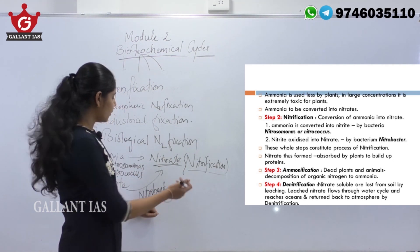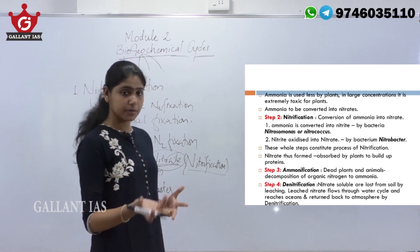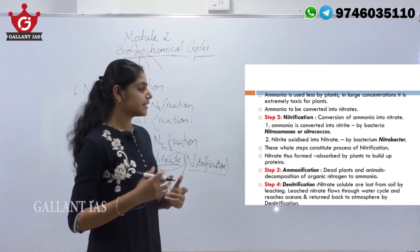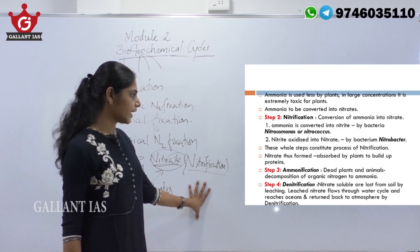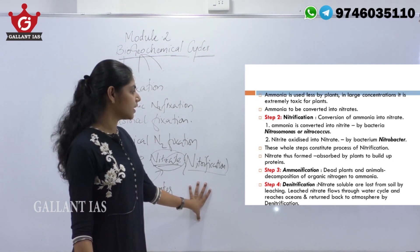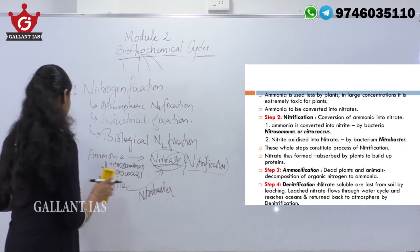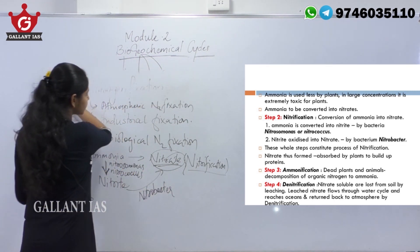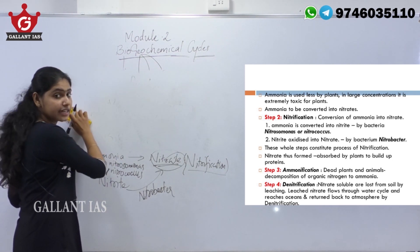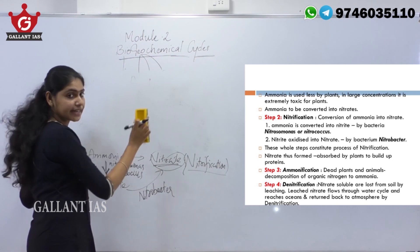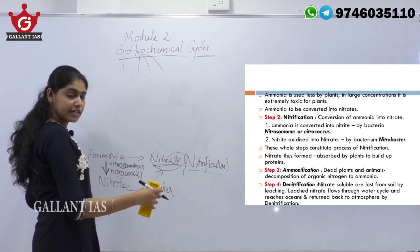Nitrates are formed and these nitrates are absorbed by plants from the soil to build up organic molecules of food, and then passed on to consumers. The third step is ammonification. First step: nitrogen fixation — nitrogen converted to ammonia. Second step: nitrification — ammonia converted into nitrate, with an intermediary step where ammonia is first converted into nitrite and then nitrite is oxidized into nitrate.